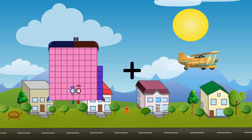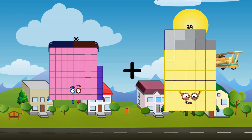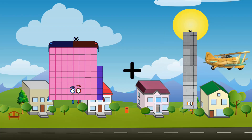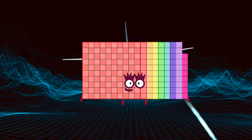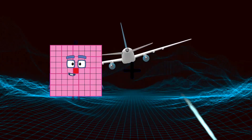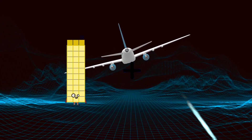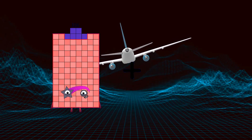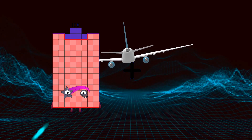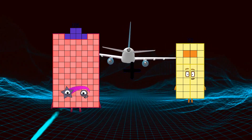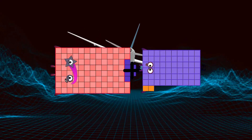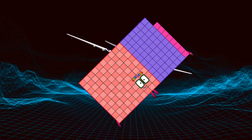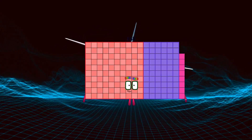86 loss 92 equals 178. 106 plus 62 equals 168.